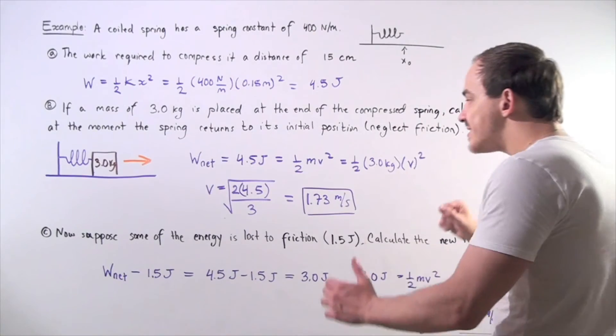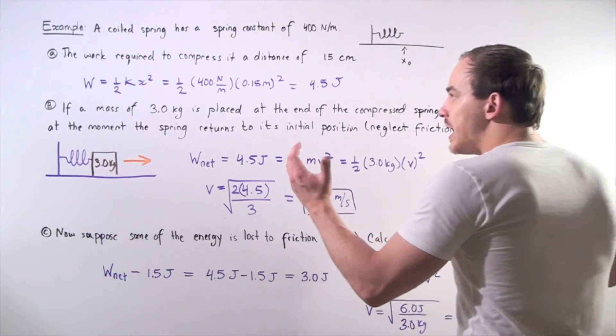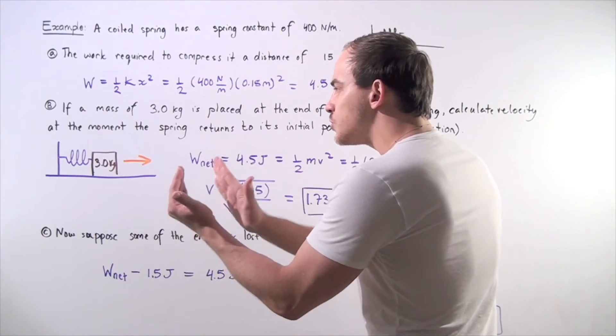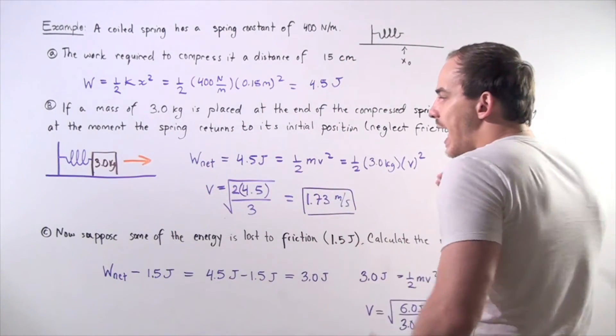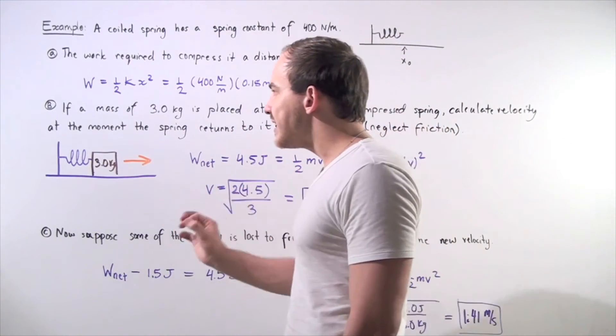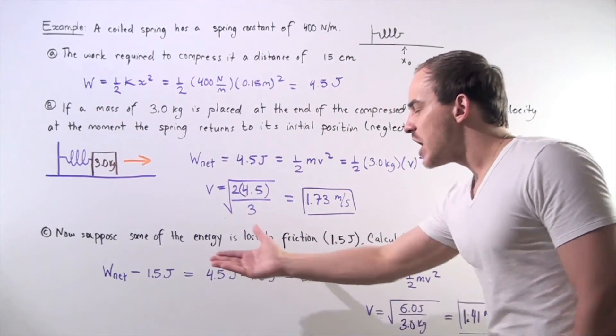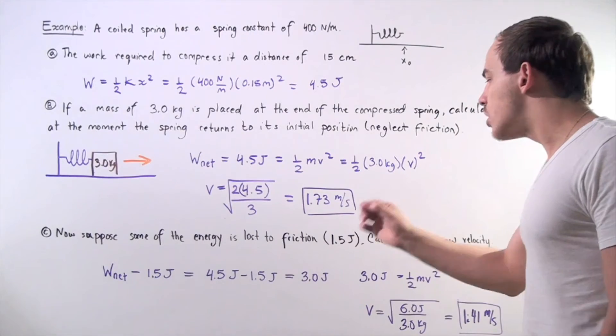In step A, we essentially transferred energy into the spring. In part B, the energy in the spring was transferred into the block. And in part C, we essentially want to redo part B. But now, suppose some of the energy is lost to friction.